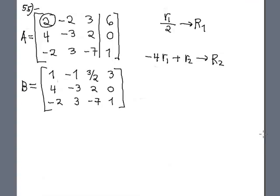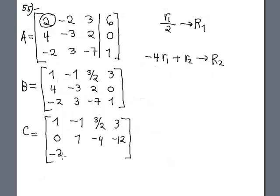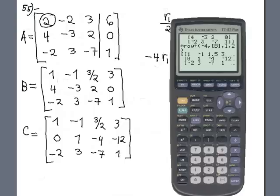The answer is the matrix C. So far is 1, negative 1, 3 half, this stays the same, 3. And second row is 0, 1, negative 4, and negative 12. And row 3 stays the same. Let's check it with the calculator, see the answer is correct. 0, 1, negative 4, and negative 12, perfect. Now you store this in the matrix C.